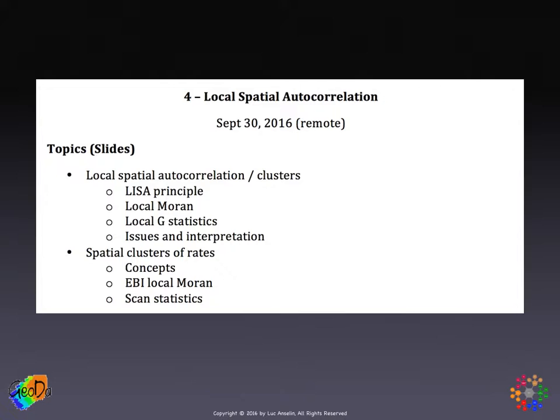We'll see two different flavors of dealing with this. One is through standardization of the rates — the empirical Bayes inspired method for the local Moran, we call it EBI. The second approach is very common in public health and medical statistics, and is based on scan statistics.